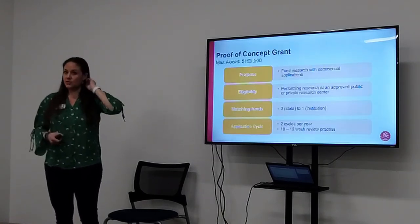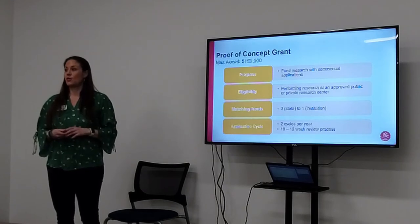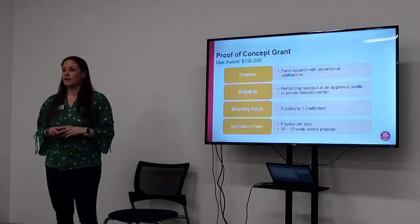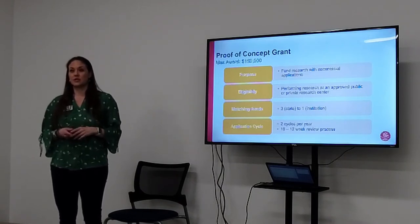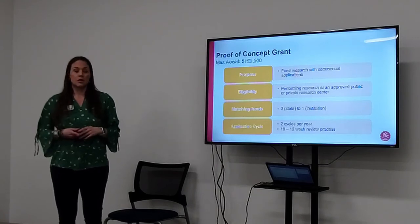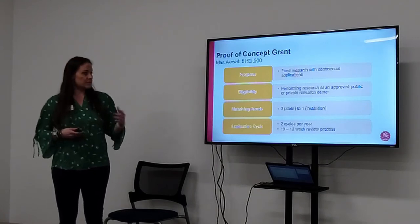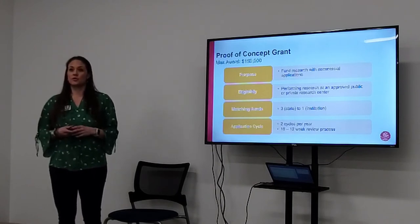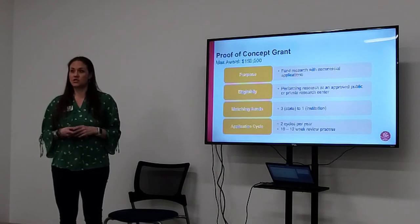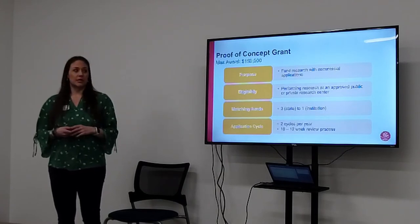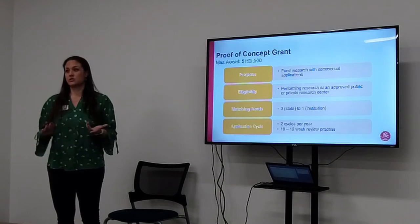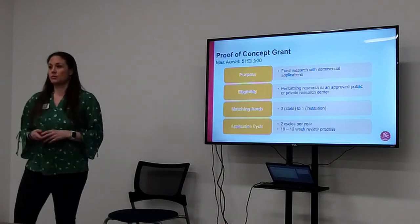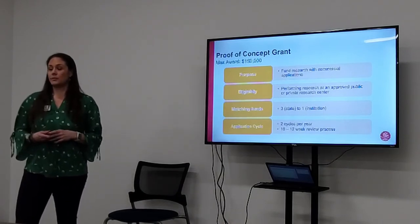Doing a deep dive into each opportunity: proof of concept is that early stage proving that technology works. You have to apply through a technology transfer office at a research institution. You can ask for $150,000, and all of our funding is a matching grant with cash — you need $50,000 of cash match. If you're working in a research institution and are a recipient of federal funding, you can match with those federal funds.